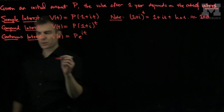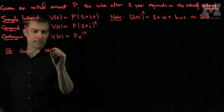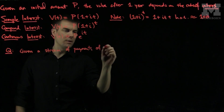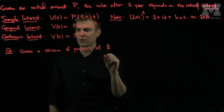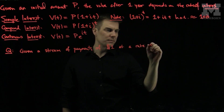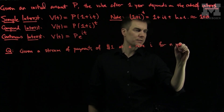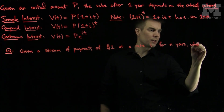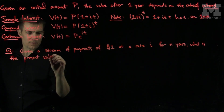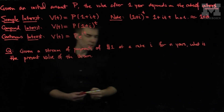Now we will see how to use these formulas to discount money. We can ask the following question: given a stream of payments of $1 at a rate i for n years, what is the present value of the stream?